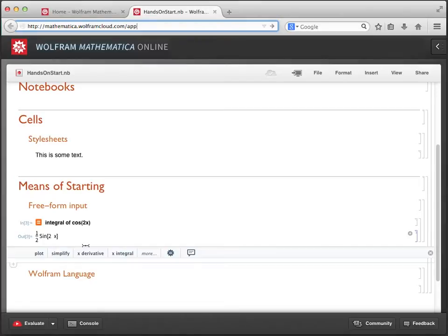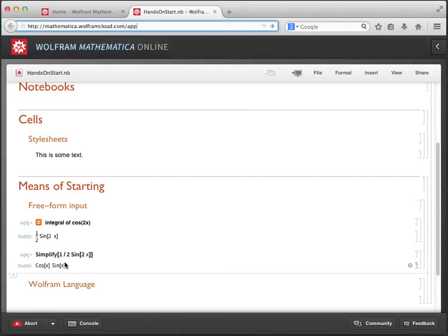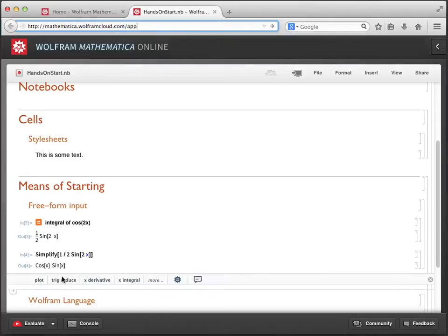So let's take a look at how to use the Suggestions bar. We see that one of the Suggestions is to take our result and simplify it. Let's choose this option of Simplify by clicking on it. When we do that, we see that Mathematica simplifies our expression to cosine of x times sine of x. That's pretty neat. And like with Freeform Input, we don't need to know any Mathematica commands to do this. We just make choices from the suggestions that were provided to us.